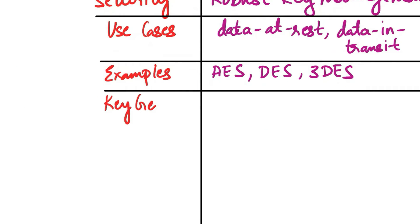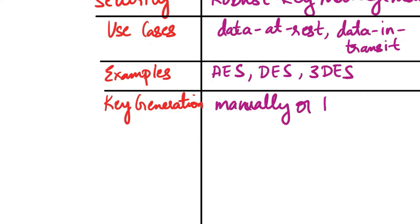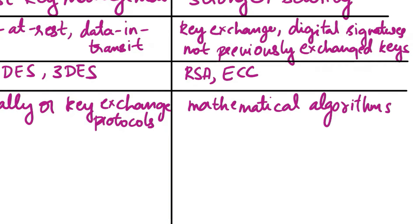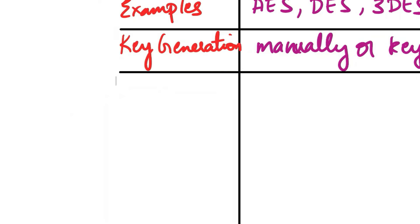The next aspect is key generation. In symmetric cryptography, keys are generated and distributed manually or using key exchange protocols. In asymmetric cryptography, keys are generated using mathematical algorithms, often with user-specific public keys.